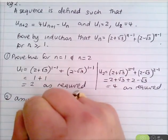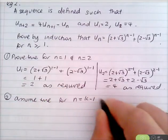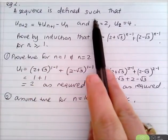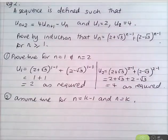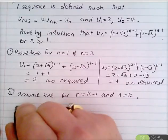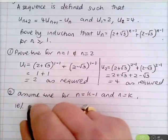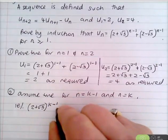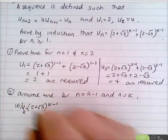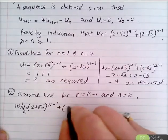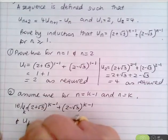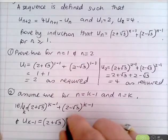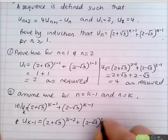Step 2: assume true for n = k − 1 and n = k. So we assume u_k = (2+√3)^{k−1} + (2−√3)^{k−1} and u_{k−1} = (2+√3)^{k−2} + (2−√3)^{k−2}.